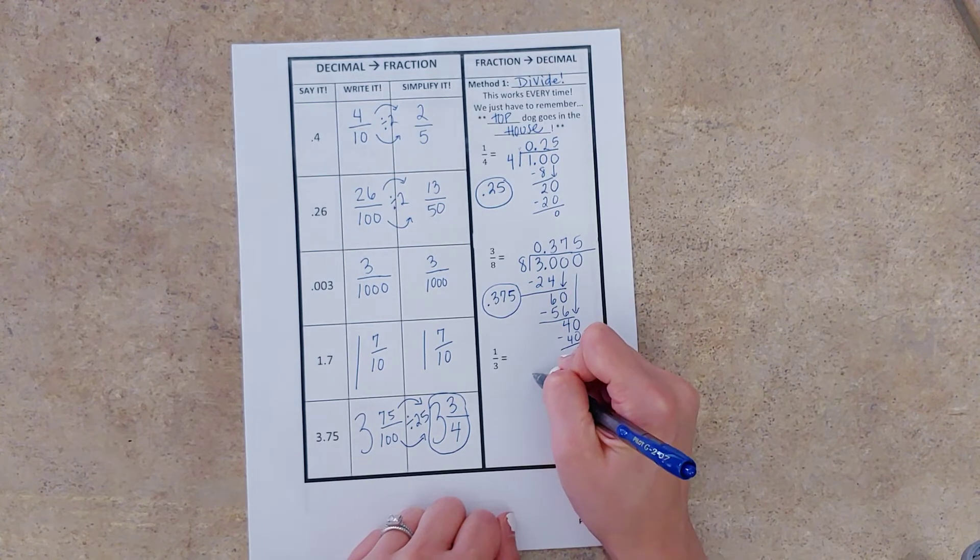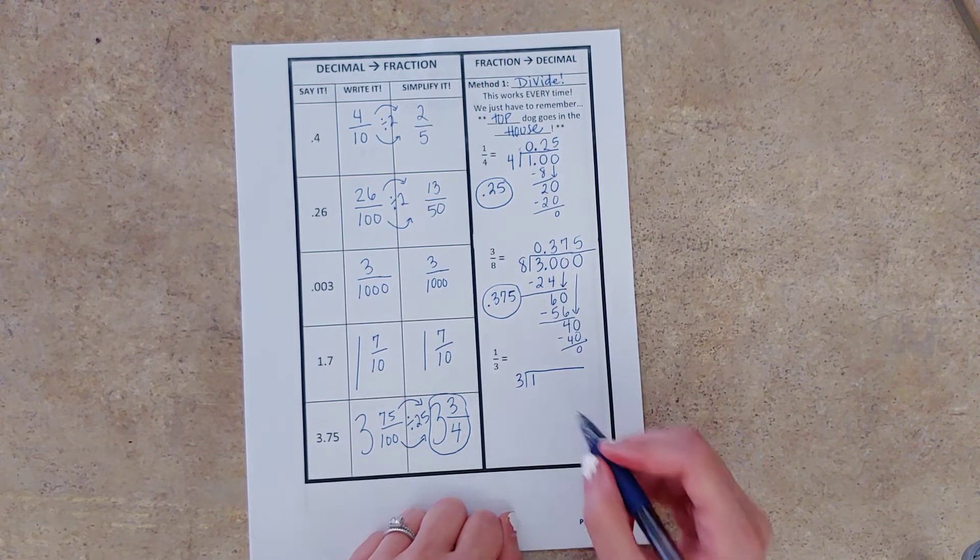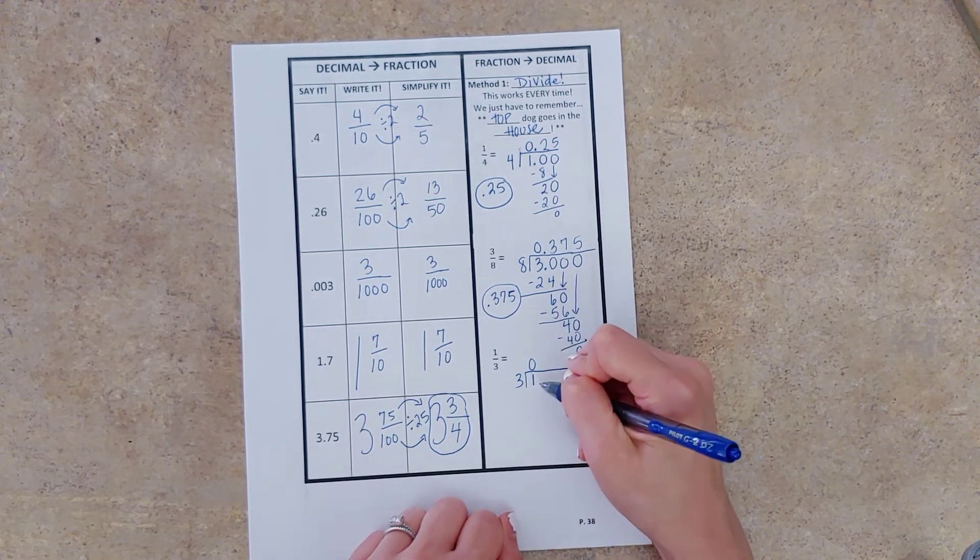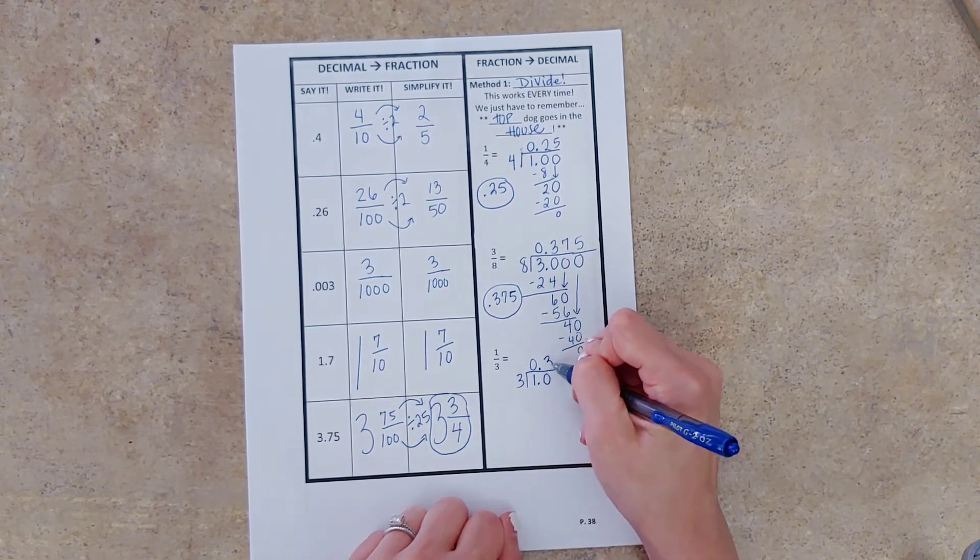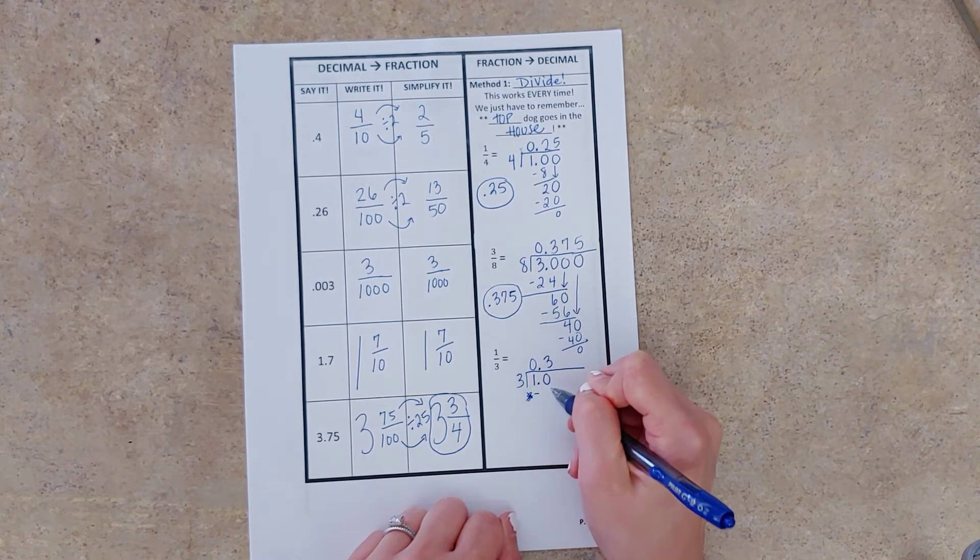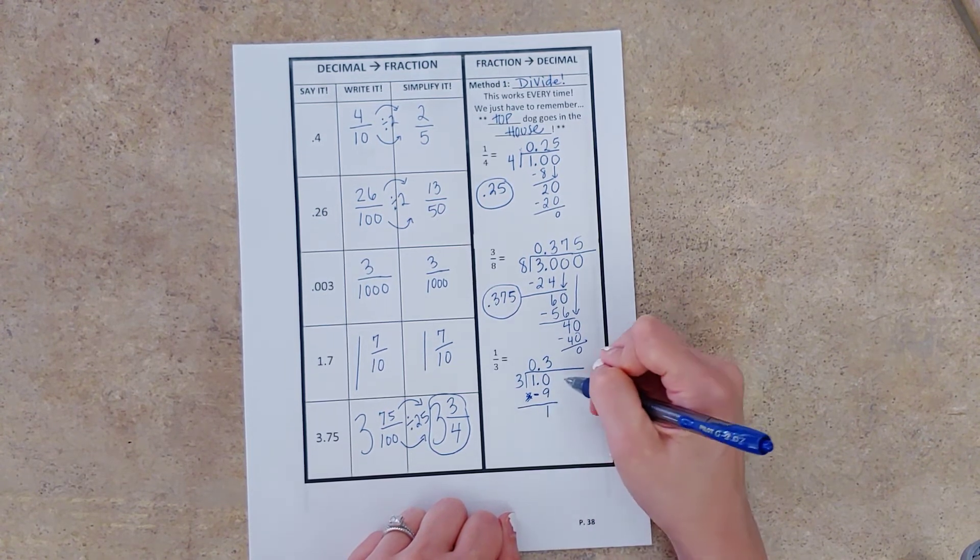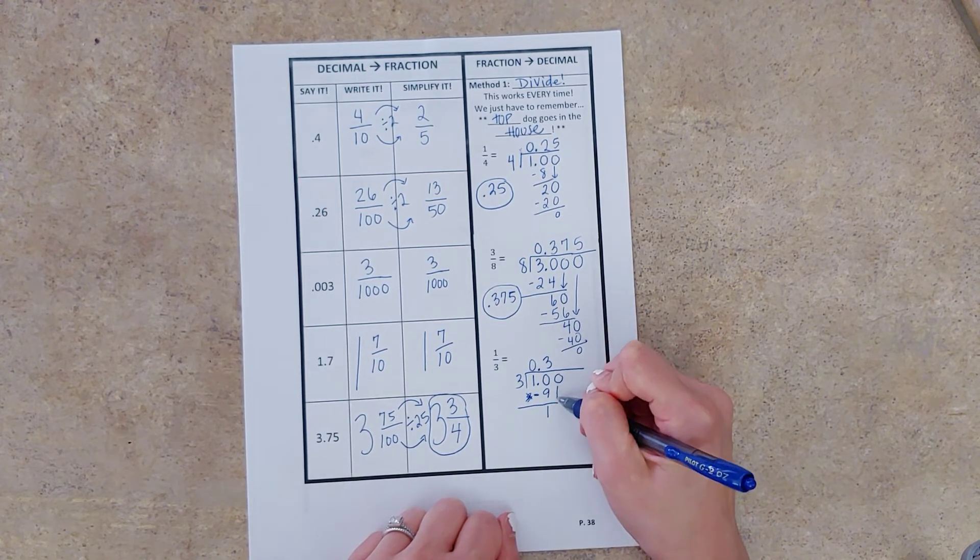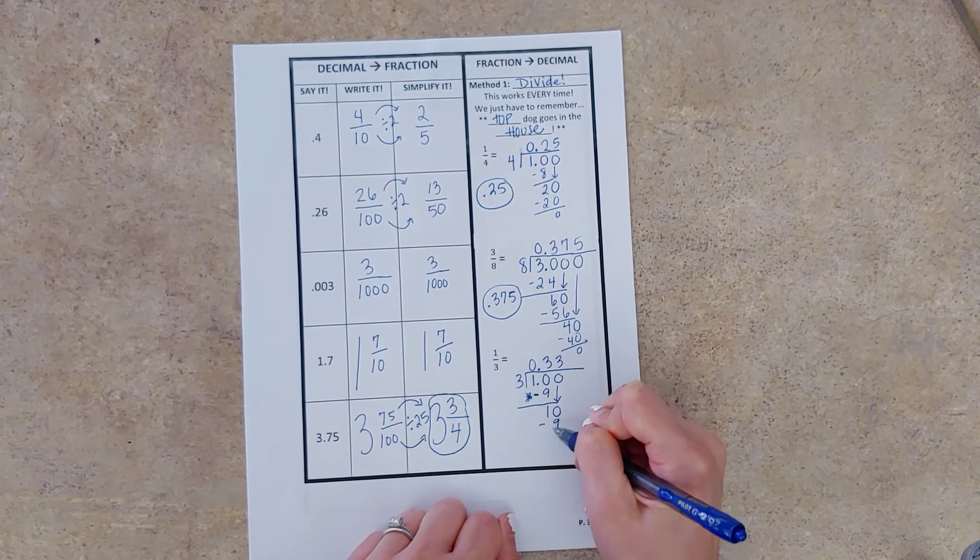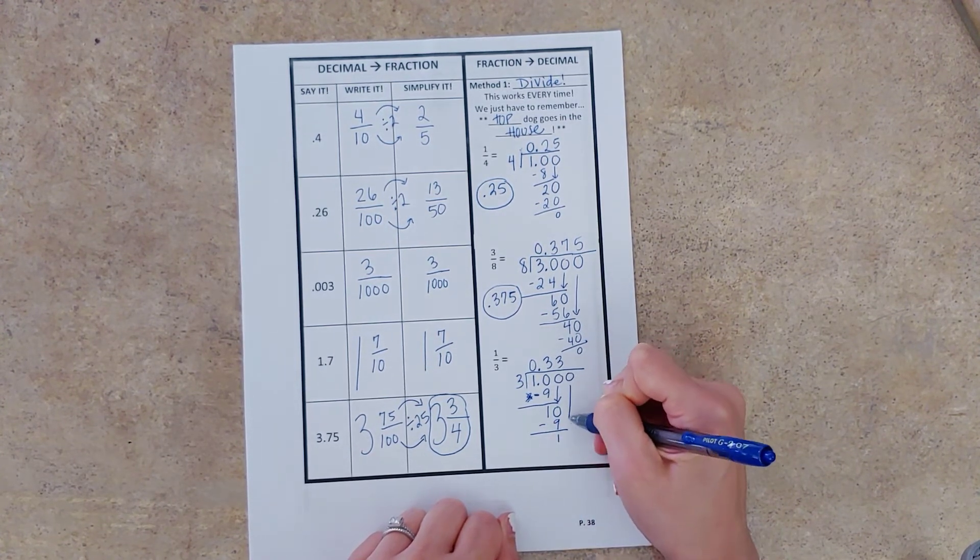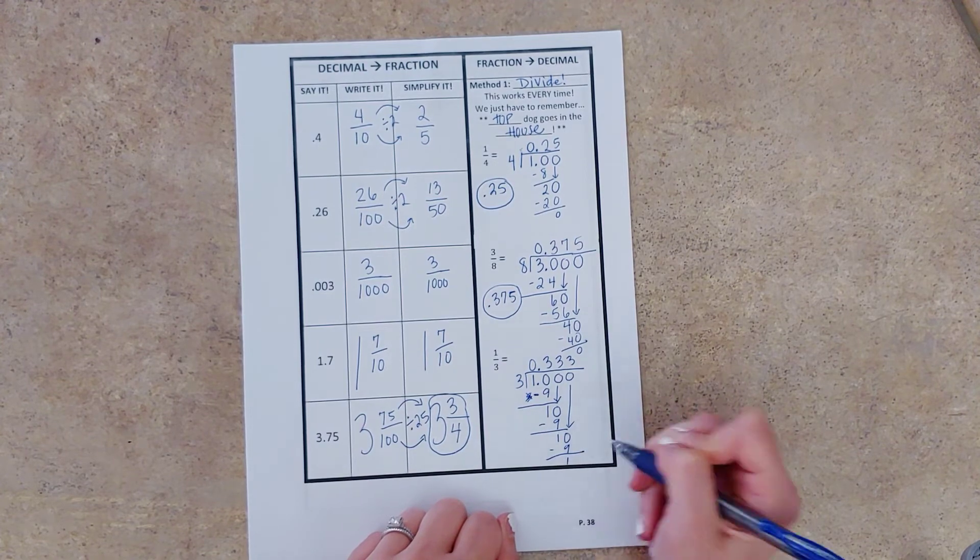All right, now one-third. Our top dog is in the house. Denominator's at the door. And now we just divide. Three goes into one zero times. Add a decimal so we can keep dividing. Three goes into ten three times. Whoops. Got a little excited there with the multiplication symbol. Ten minus nine gives us one. All right, we've got a remainder. So we add that zero. Oh, do we see a pattern that is starting to emerge?